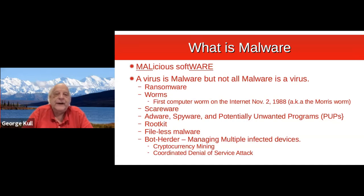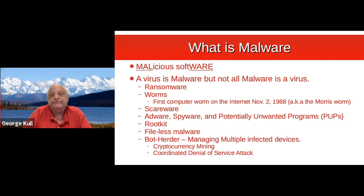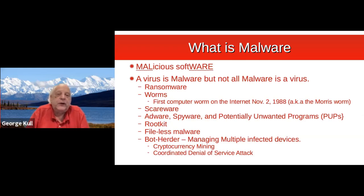Other types of malware include scareware, where all of a sudden you'll get a warning popping up on your screen saying we've detected that your operating system has a major flaw — please click this button to upgrade your device. It's trying to scare you and use social engineering to get you to click the button. Then we have adware, spyware, and PUPs — potentially unwanted programs.